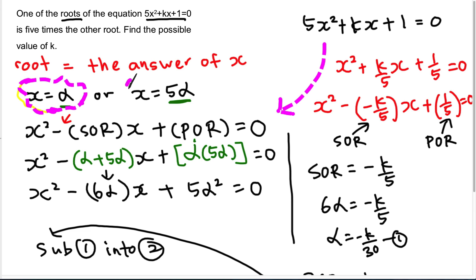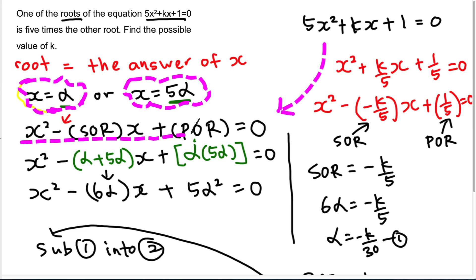Let me repeat one more time. The important part is you must understand that X₁ is alpha and the other is 5 times alpha. This pattern can change — sometimes one root is half the other, sometimes 3 times. Once you understand the meaning of root as the answer of X, the question becomes much easier. Remember this formula: the coefficient of x² must equal 1, and the sign before the sum-of-roots term must be minus.